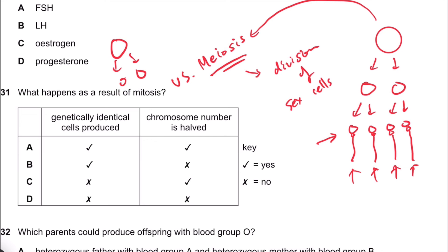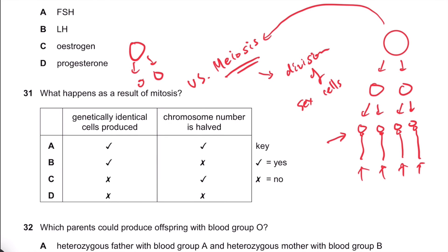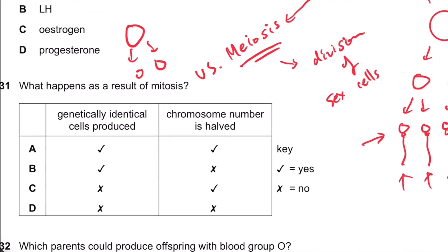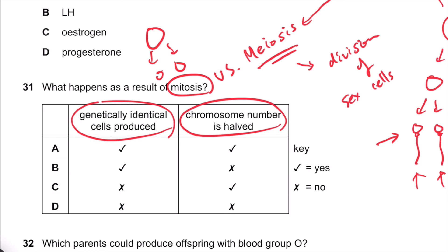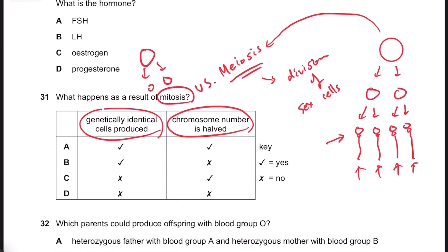But for now, the result of mitosis always produces genetically identical cells, and the chromosome numbers are conserved — they stay the same. Okay, cool.